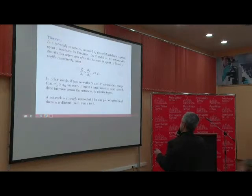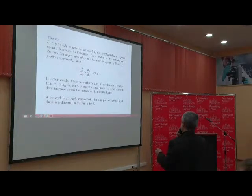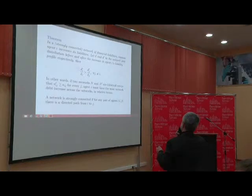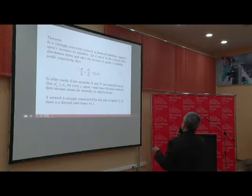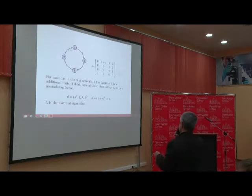The second important consistency property is that if one firm increases its liabilities, holding everything else the same, the distribution changes: that agent gets more weight. This is a type of axiom establishing the consistency of the measure. To illustrate this theorem: in the ring network, everybody is equally important — very homogeneous. But what happens if one bank borrows a little bit more? An exogenous liquidity injection causes one bank to borrow more. What happens to the network distribution? Does one of them become more important in terms of fragility?